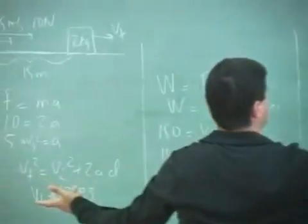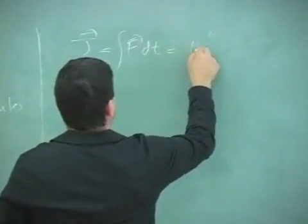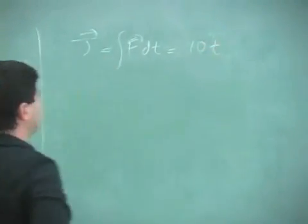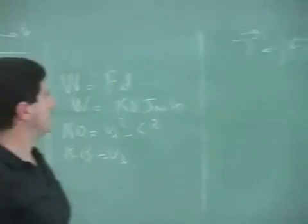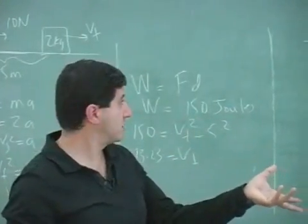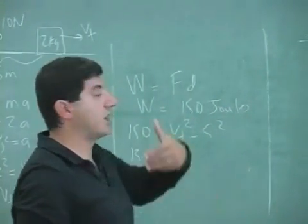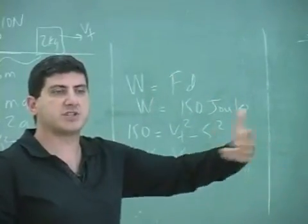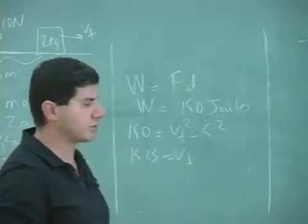It would be the integral of F dt. Well, in this case, the force is constant, so you don't need to integrate. So 10 times the time. So it's 10 newtons times how many seconds the force is being applied.